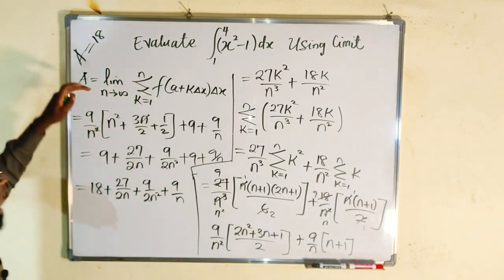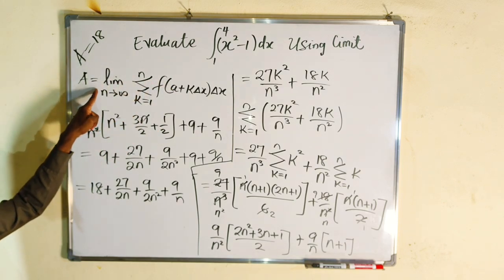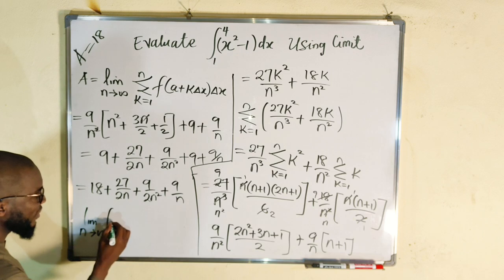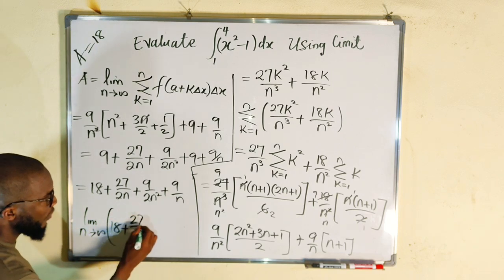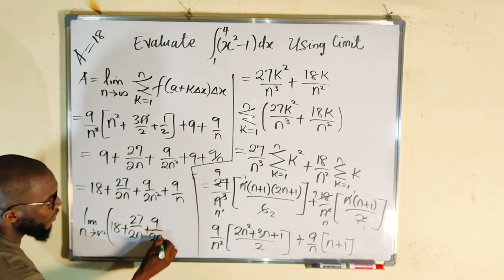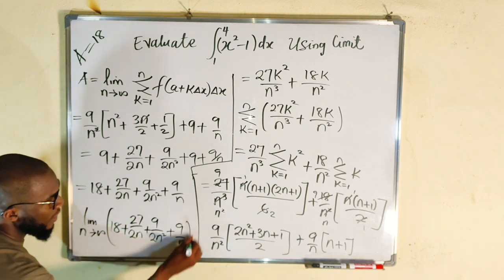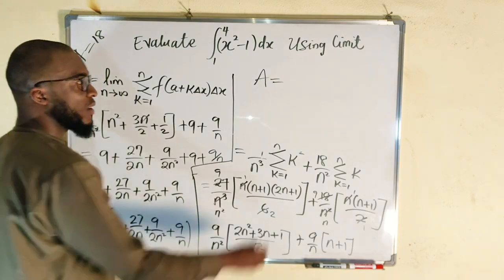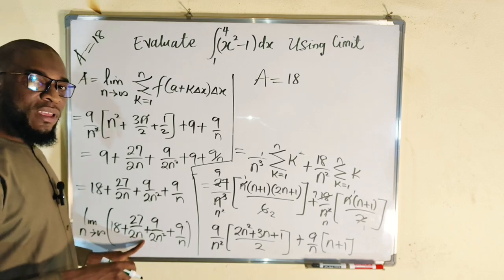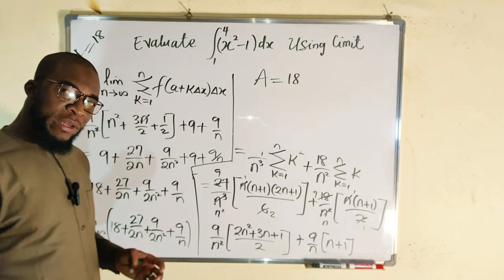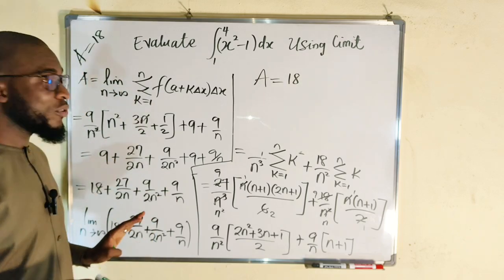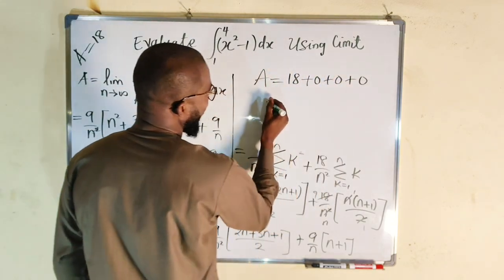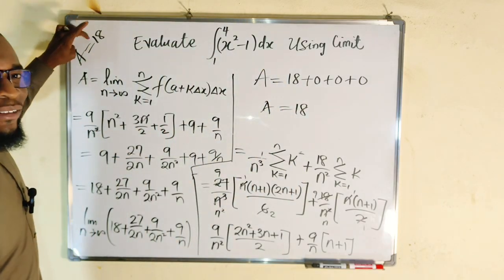We're almost done — let's take the limit. We have the limit as n approaches infinity of 18 plus 27 over 2n plus 9 over 2n squared plus 9 over n. The limit of a constant is still that constant, so we have 18. As n approaches infinity, each fraction becomes bottom-heavy and approaches zero. So all the fractional terms equal zero, and the area equals 18 — exactly the same as our previous answer.